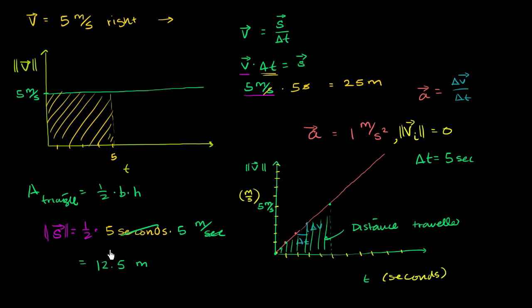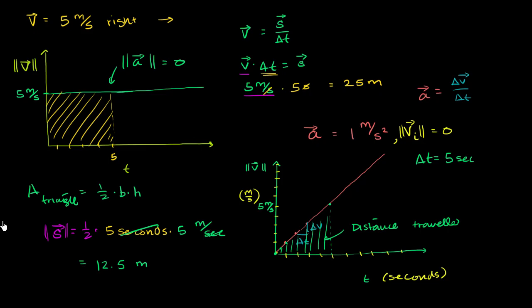There are a couple of interesting things here. Hopefully you realize that if you're plotting velocity versus time, the area under the curve for a given amount of time tells you how far you have traveled. The other interesting thing is that the slope of the curve tells you your acceleration — in the constant-velocity case the slope is completely flat, meaning acceleration is 0; here we have an acceleration of 1 meter per second squared, which is why the slope of this line is 1. Even with constant acceleration, you can figure out distance by taking the area under the curve, which gave us 12.5 meters. In the next video I'll introduce the idea of average velocity.